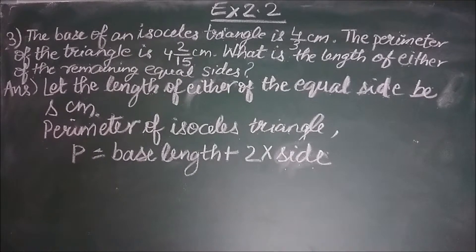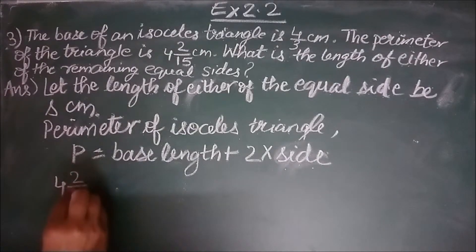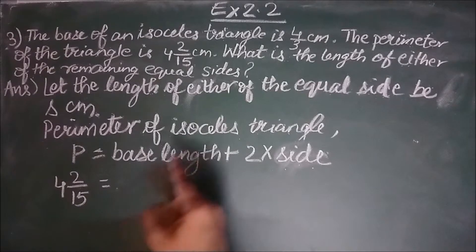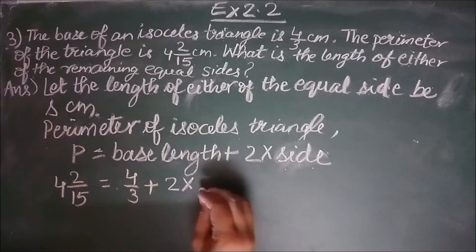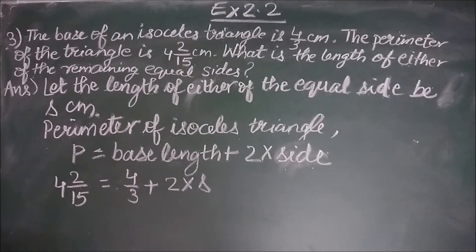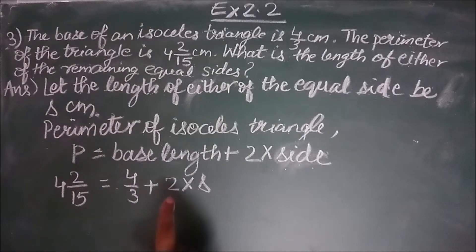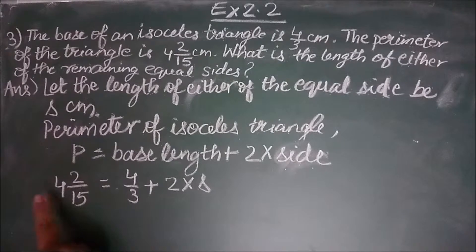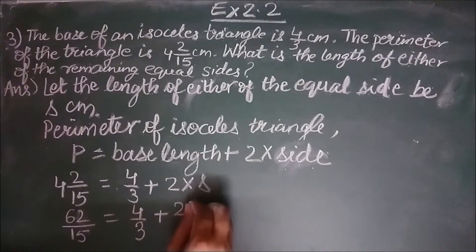Let us substitute the values now. P is 4 2 by 15 equal to base is 4 by 3 plus twice into side. Side is S. This is our linear equation in one variable. Variable is S and the constants are 4 2 by 15 and 4 by 3 and also 2. This is our mixed fraction. Let us convert it into an improper fraction. 15 4s are 60. 60 plus 2 is 62.